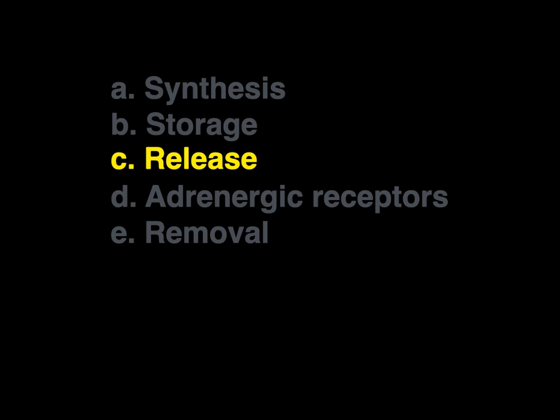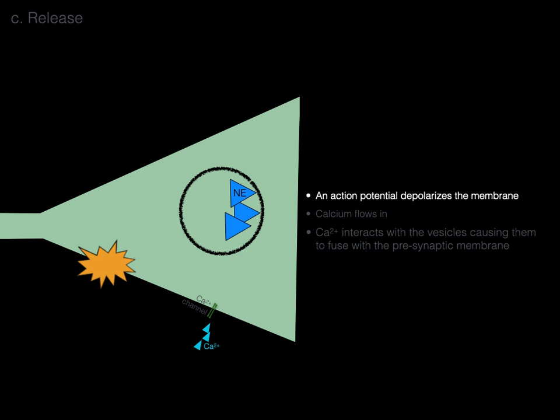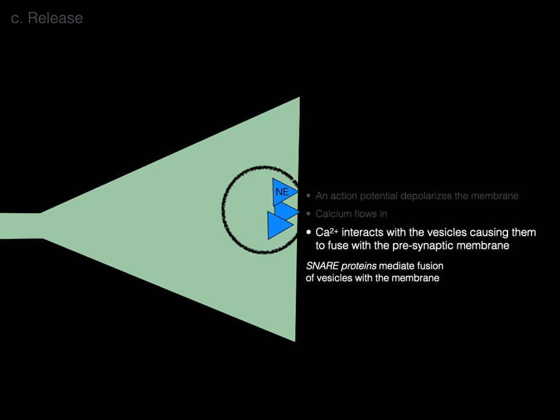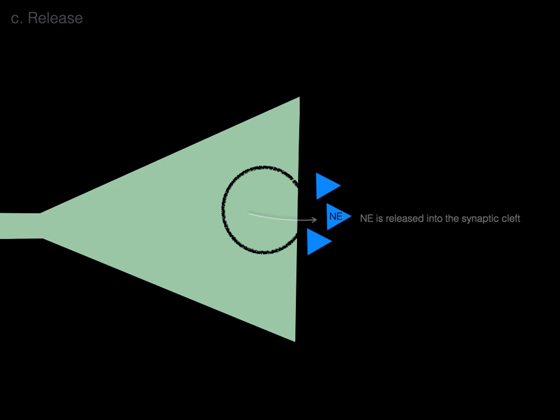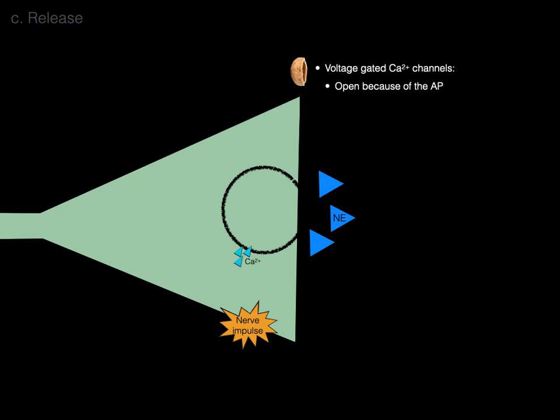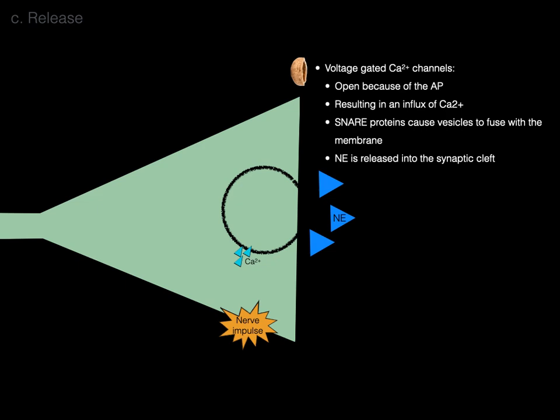Now let's go to release. An action potential spreads and depolarizes the membrane in the terminal axon, causing voltage-gated calcium channels to open and calcium to flow in. The calcium interacts with the vesicles, causing them to fuse with the presynaptic membrane because SNARE proteins mediate the fusion of those vesicles filled with norepinephrine. As a result, norepinephrine is released into the synaptic cleft. So: voltage-gated calcium channels open due to the action potential, resulting in calcium influx; SNARE proteins cause vesicle fusion with the membrane; and norepinephrine is released.